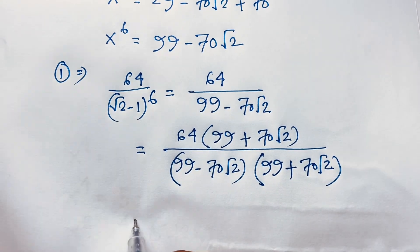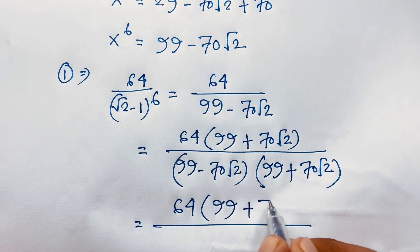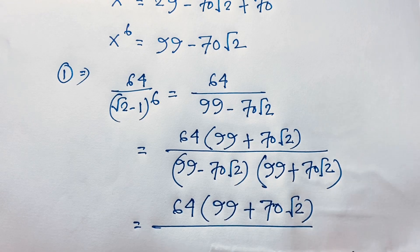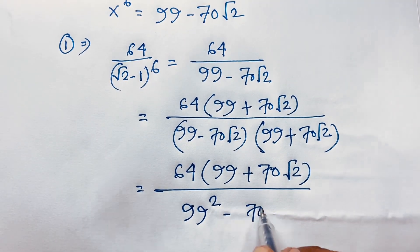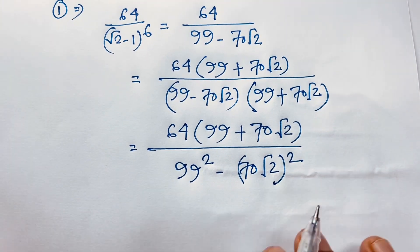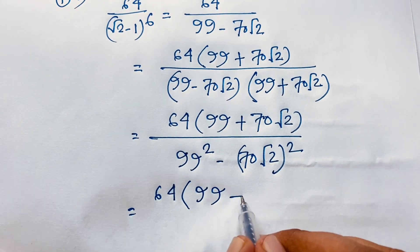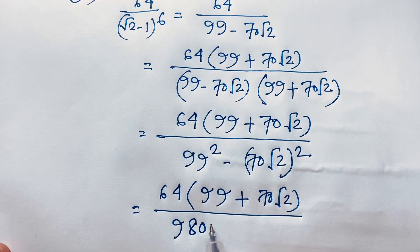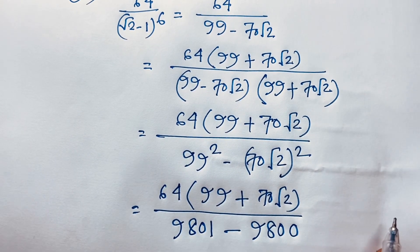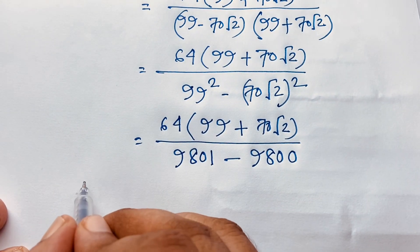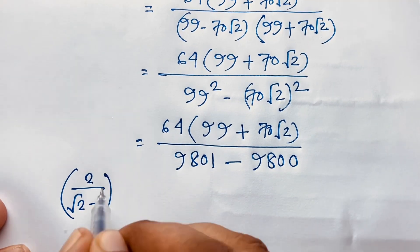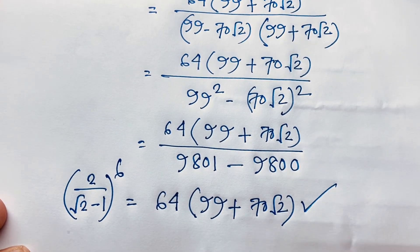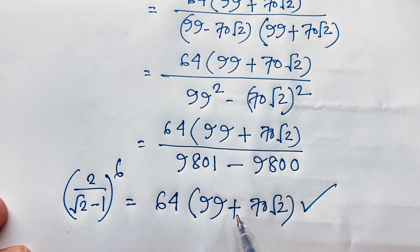Using the identity (a+b)(a-b) = a²-b², the denominator becomes 99² minus (70√2)² which equals 9801 minus 9800 equals 1. So the final answer for 2 over (√2 minus 1) to the power 6 equals 64 times (99 plus 70√2). This is our final answer and real solution to this Math Olympiad question.